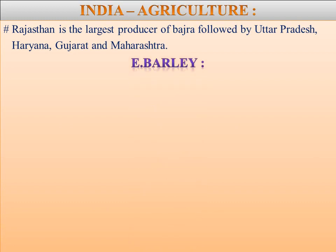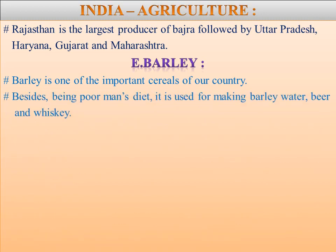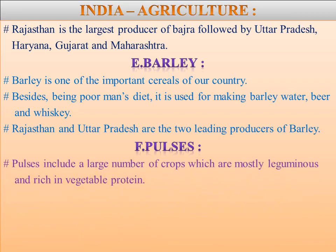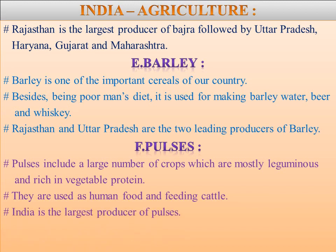Next we are going to learn about Barley. Barley is one of the important cereals of our country. Besides being a poor man's diet, it is used for making barley water, beer, and whiskey. Rajasthan and Uttar Pradesh are the two leading producers of barley. Next, Pulses. Pulses include a large number of crops which are mostly leguminous and rich in vegetable proteins. They are used as human food and for feeding cattle. They fix atmospheric nitrogen in the soil and hence are usually rotated with other crops. India is the largest producer of pulses.